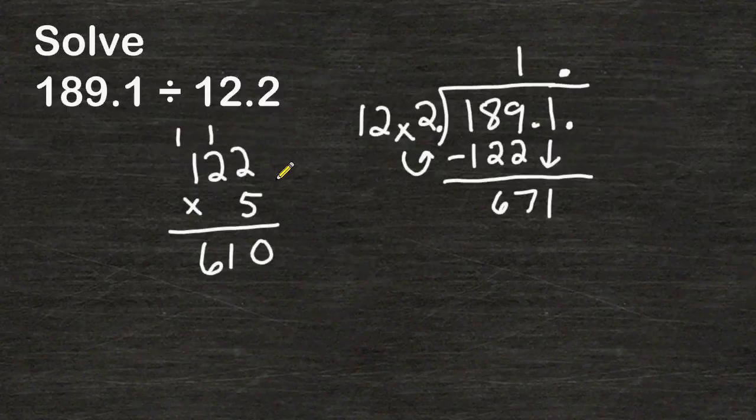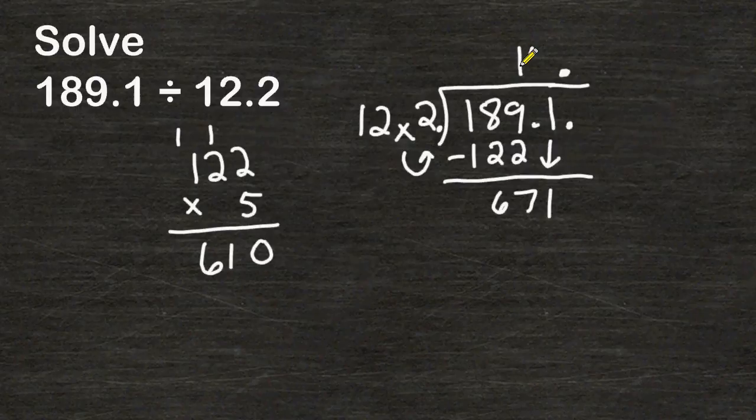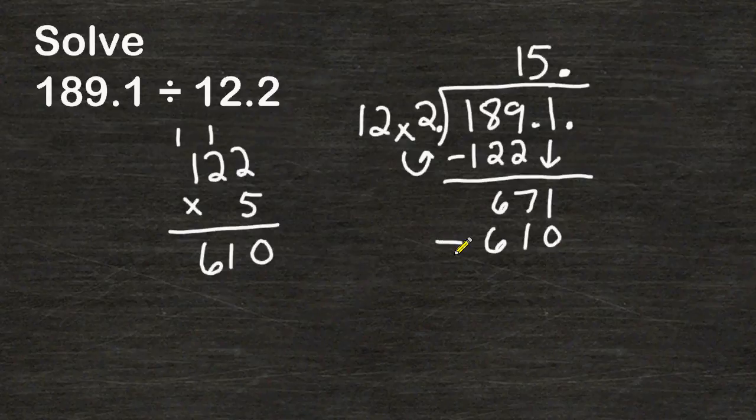If I did another group of 122 I can tell that we would go over 700. So 122 does fit in 671 five times which is 610. The next thing we do is we subtract 610 from 671 and that would give us a difference of 61.